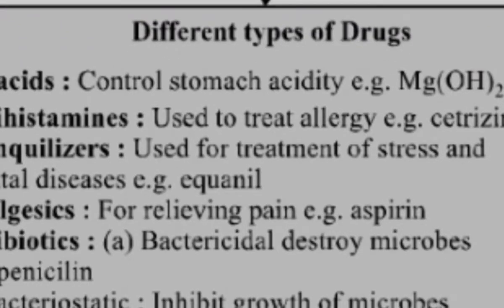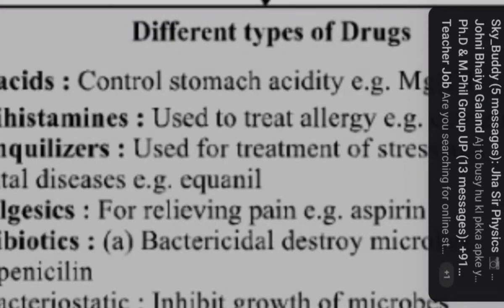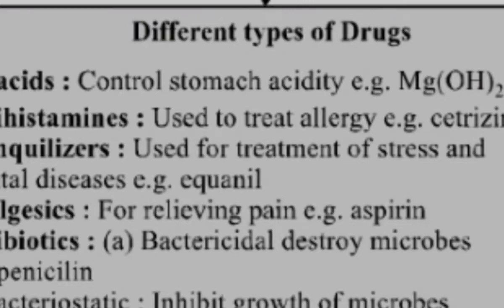Analgesics are used for relieving pain, like aspirin. Drugs which are used for the treatment of pain or relieving pain are called analgesics. An example is aspirin, which is very famous and everyone has heard of it.